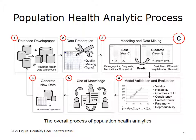As depicted in Box 3, this step usually requires a base data set and an outcome data set that would collectively include the dependent and independent variables. As illustrated in Box 4, the next step contains the model's validation and evaluation process. In this phase, the analysts use various statistical and data mining concepts to measure how good the model is in differentiating the outcome variable, and how reproducible it is when used on other data sets.